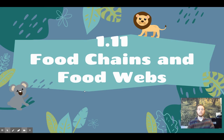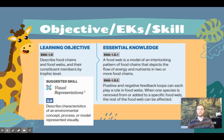We'll be talking about how food webs are just groups of food chains, and how changes to one organism within a food web can have effects on the other organisms in the food web. Our objective for today is to describe food chains and food webs, and to identify the members of food chains and food webs by their trophic levels. The skill we'll practice at the end of today's video is describing a characteristic of an environmental concept using a visual model.